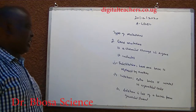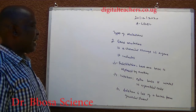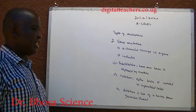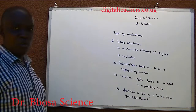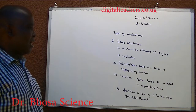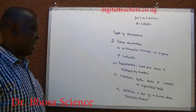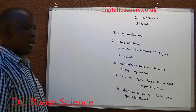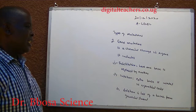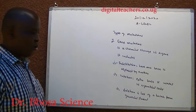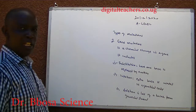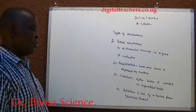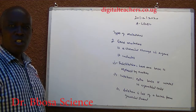Two, gene mutation is a chemical change in a gene. It includes: one, substitution — one base is replaced by another; two, insertion — an extra base is inserted into a genetic code; three, deletion — loss of a base from a genetic strand.